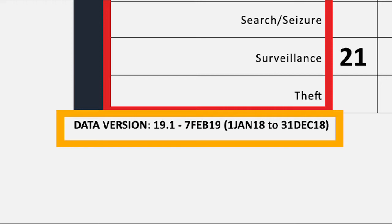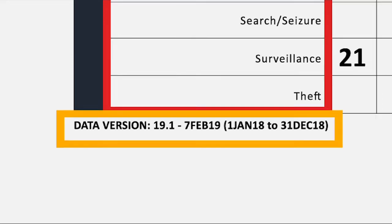The data version number is derived from the fiscal year and quarter of the most recent pool of reporting on the matrix. Data version 19.1 means we are using first quarter FY19 reporting and reporting from the three quarters before it — second, third, and fourth quarter FY18 — to round out a full year.